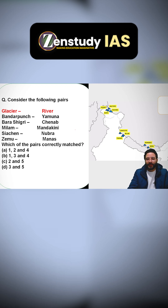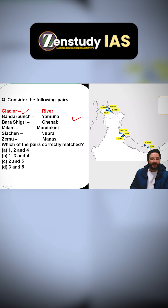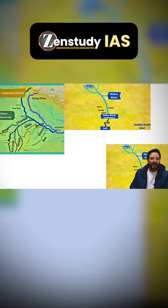Consider the following pairs. On one side we have been given glaciers, on the other side we have been given rivers. The first one is Bandarpunch glacier — the river is Yamuna. Second one, Bara Shigri — the river is Chenab. Third one, Milam — it is going to be the Mandakini. Then Siachen-Nubra, and Zemu-Manas.